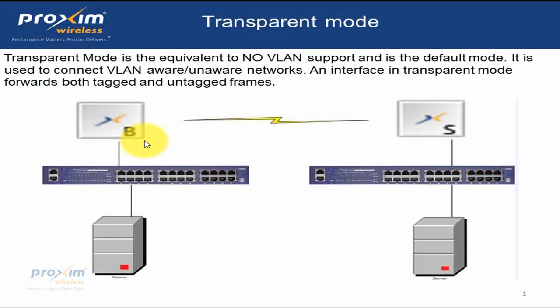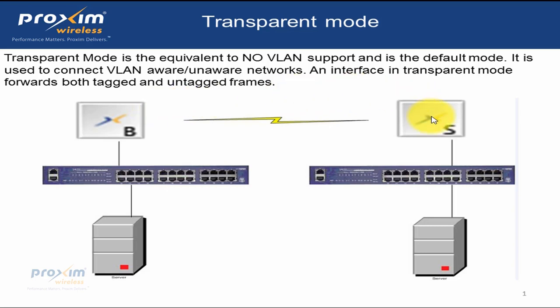Transparent mode is the equivalent of no VLAN support and is the default mode for quick bridge and MP radios. It is used to connect VLAN-aware and VLAN-unaware networks. An interface in transparent mode forwards both tagged and untagged frames. In this diagram, we have a Tsunami multipoint with a base station and satellite in transparent mode. VLAN information is passed through the base station — the base station does not do anything with it: it doesn't look at it, modify it, tag it. It just passes it along to the satellite like a plain old bridge, an invisible wire, and on to the other VLAN switch.